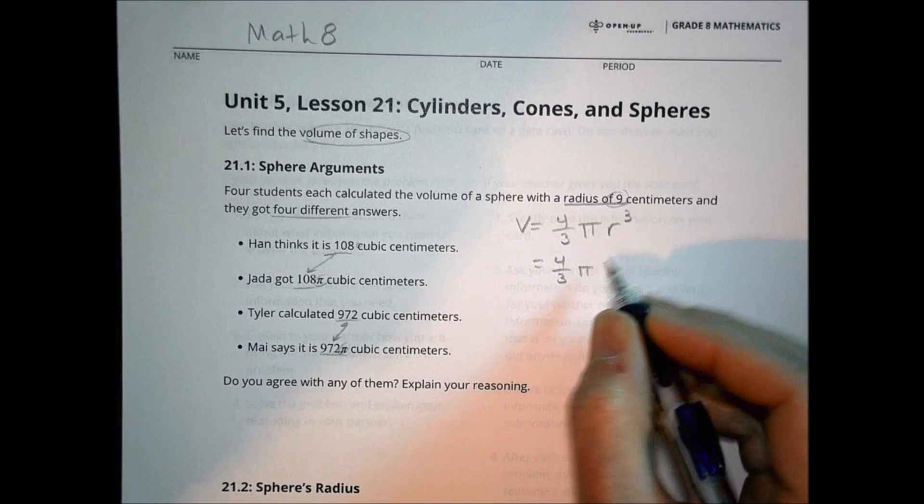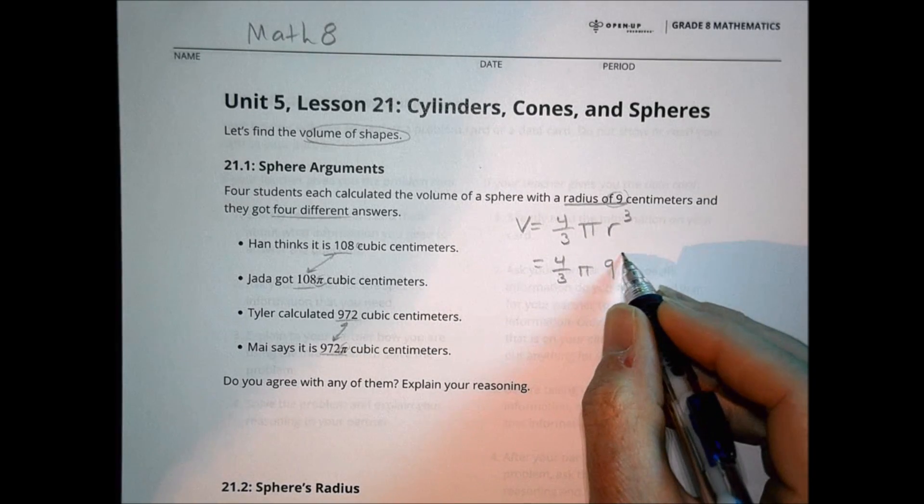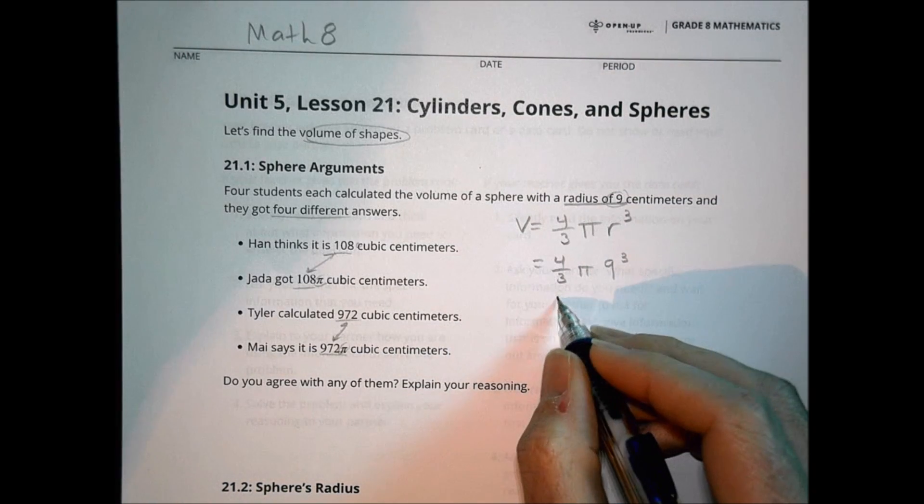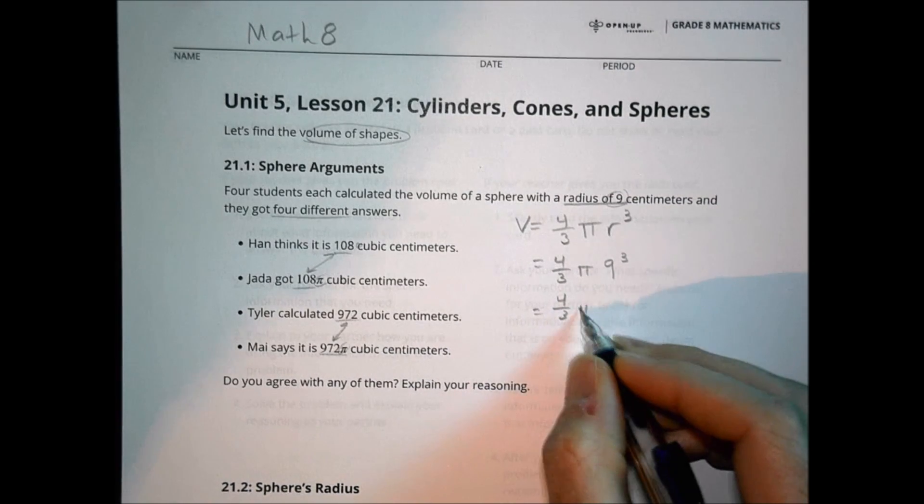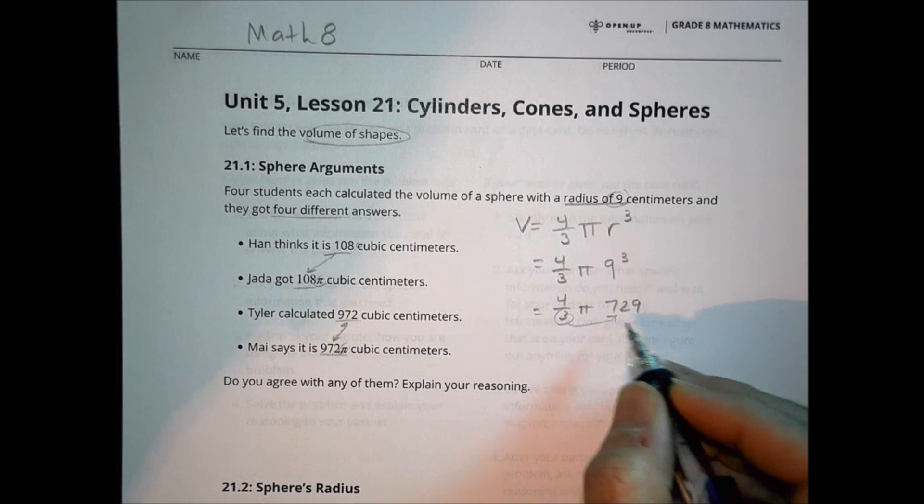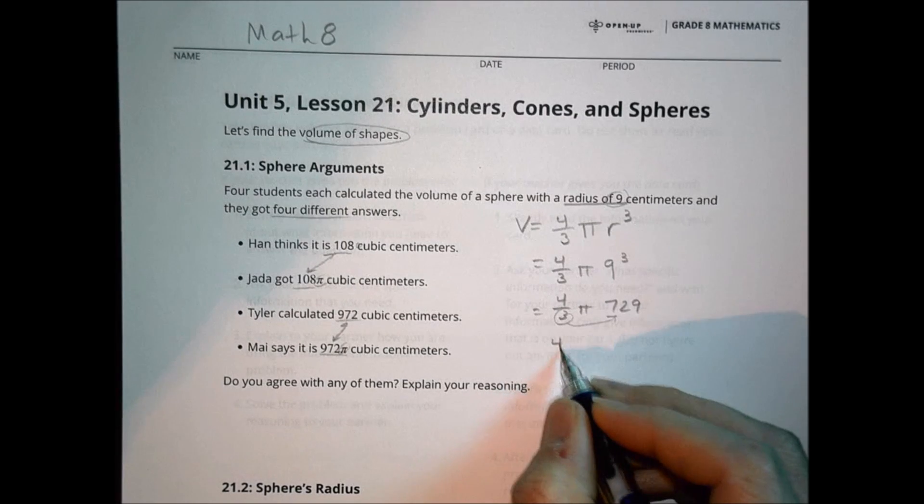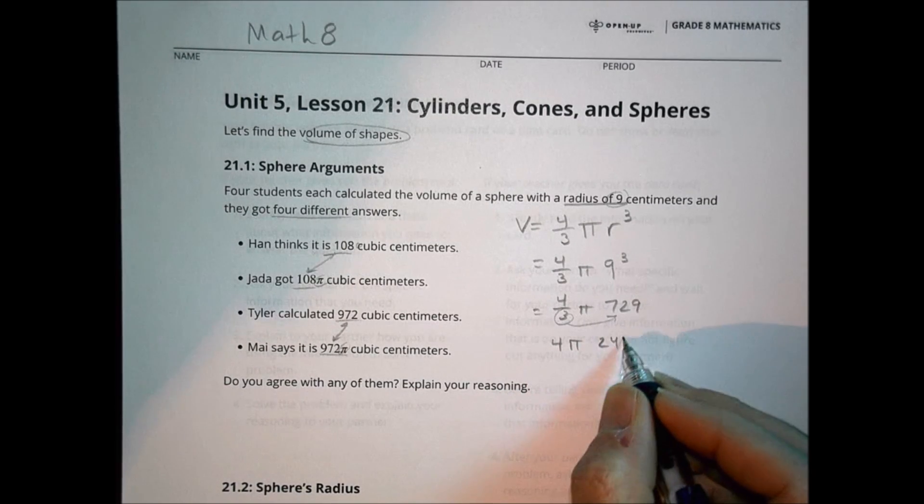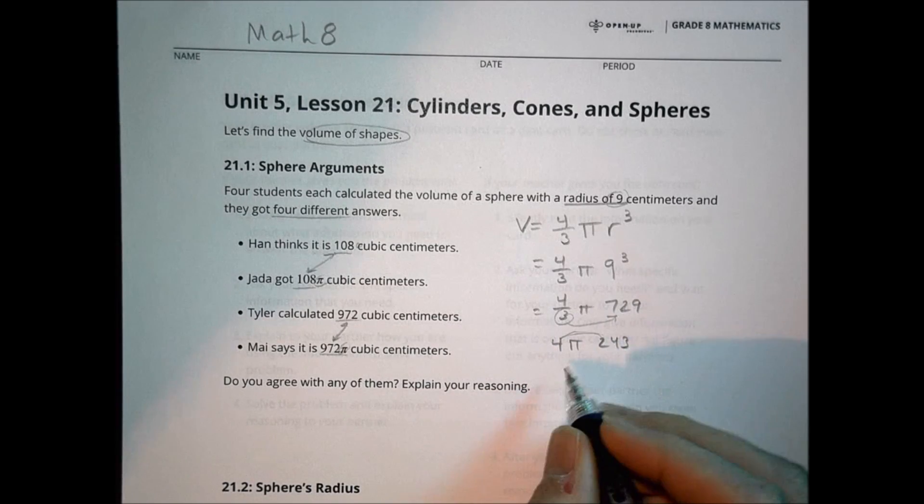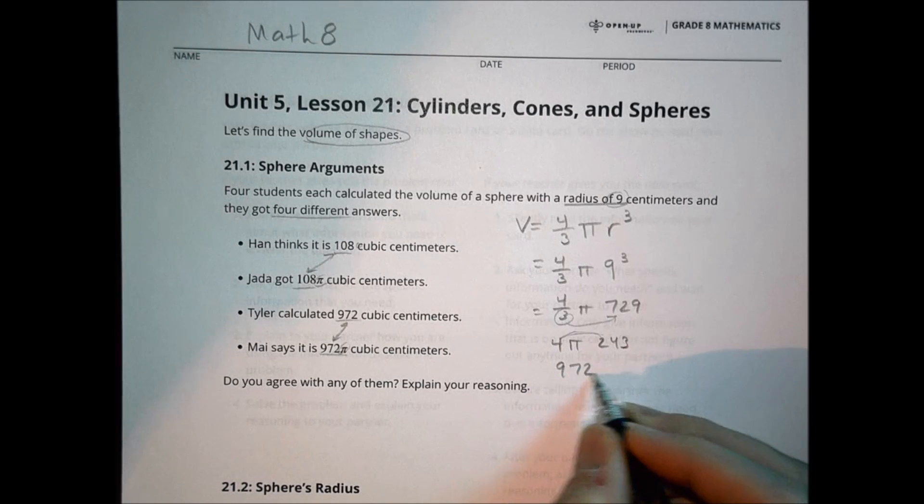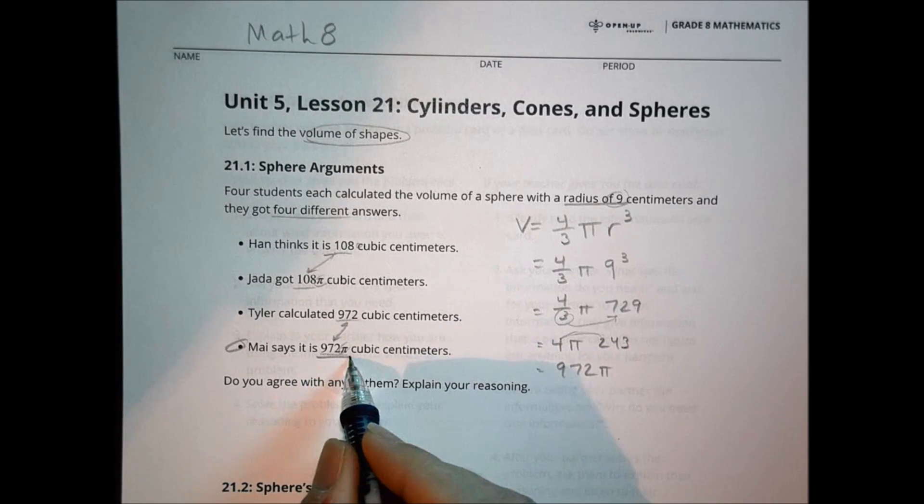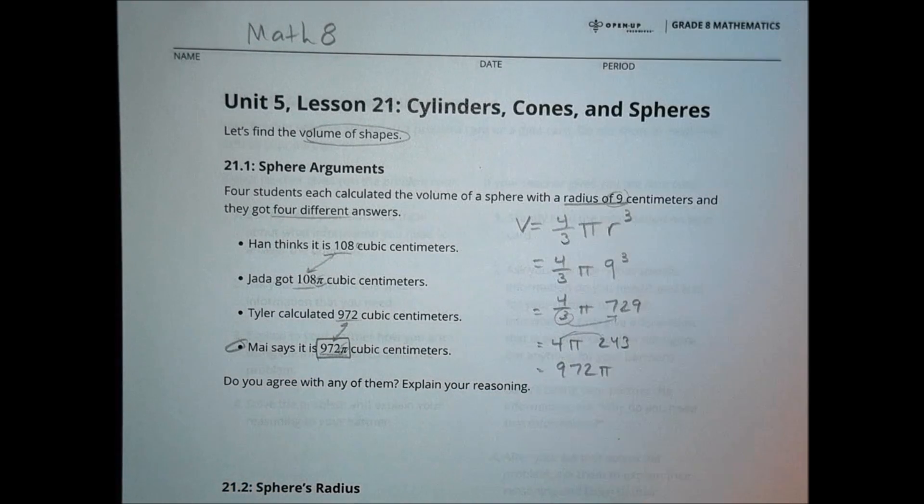We have 4 thirds times pi times 9 cubed. Well, 9 cubed is 9 times 9 times 9, which is a large number. So 4 thirds times pi, which is 729. If I divide 729 by 3, I end up with 4 pi and 243. So 729 divided by 3 is 243. I multiply those together to come up with 972 pi. So, in our case, we would say we agree with May with 972 pi. And that's what we would say there.